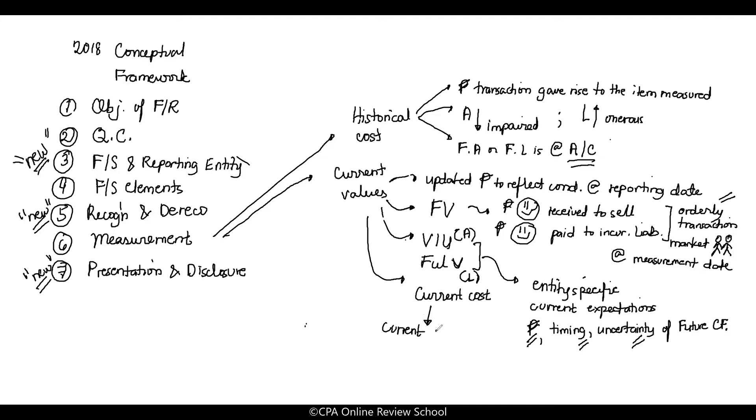Current cost is the current amount. This comes from the framework. Current amount of what? You are willing to be paid to acquire an asset. That's what current cost means. And also what you are willing to receive to incur a liability.